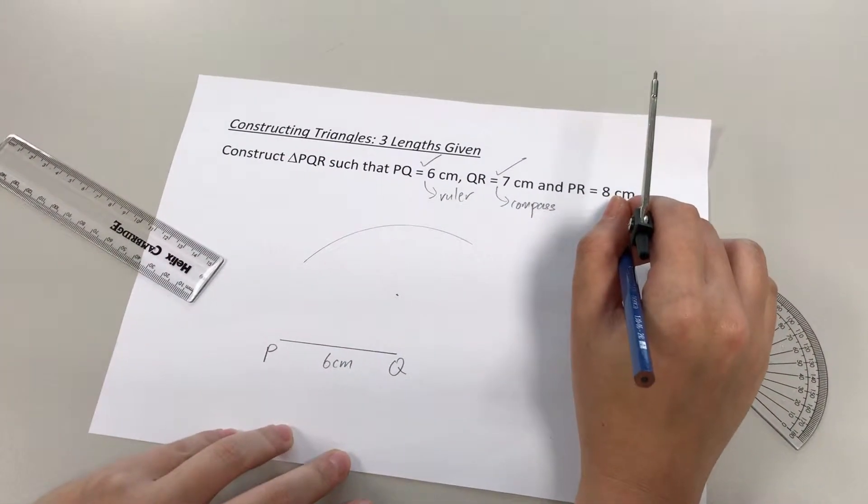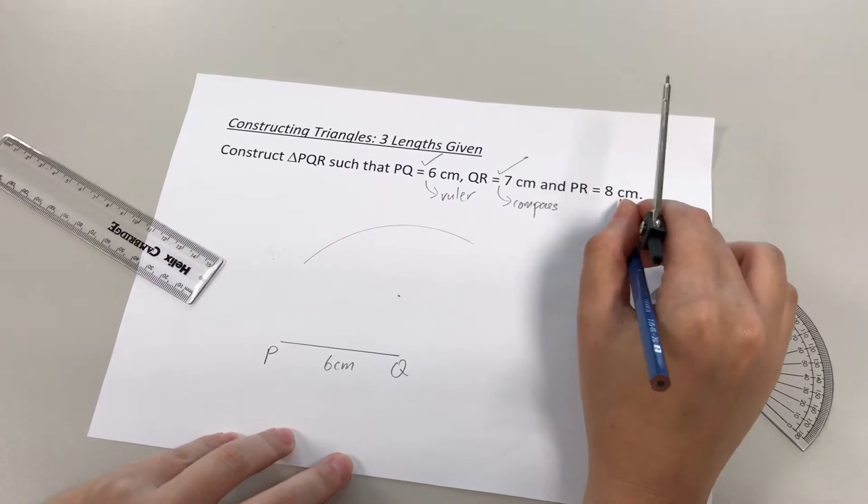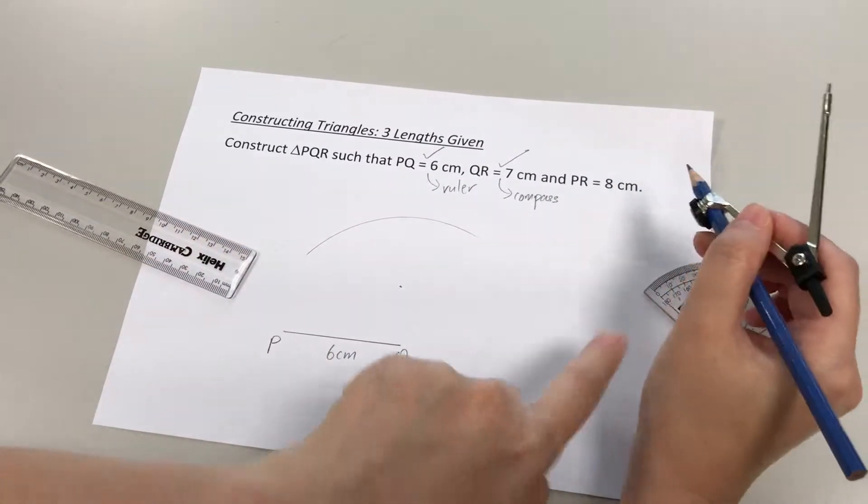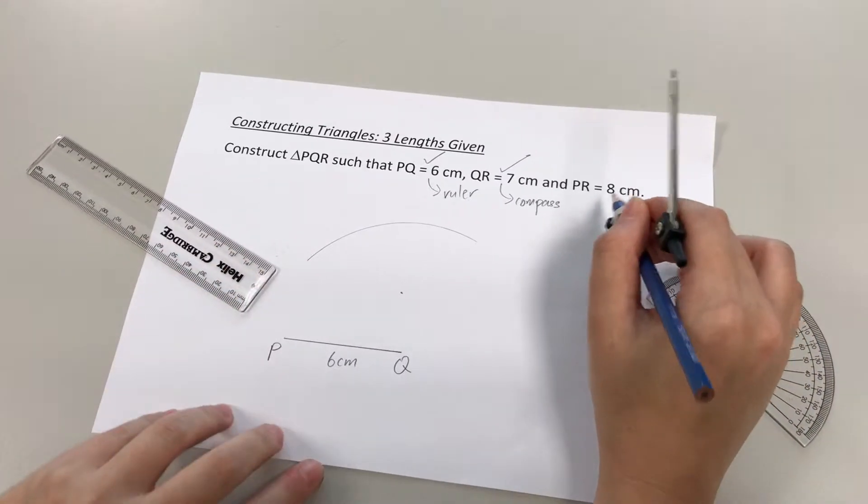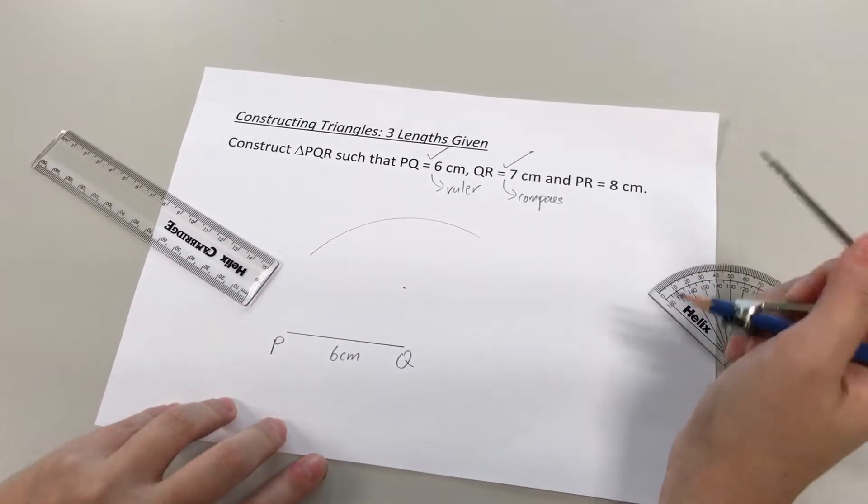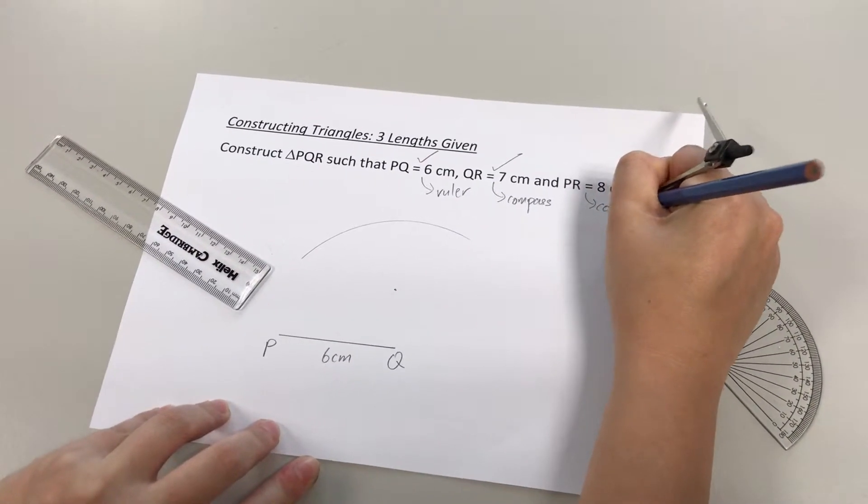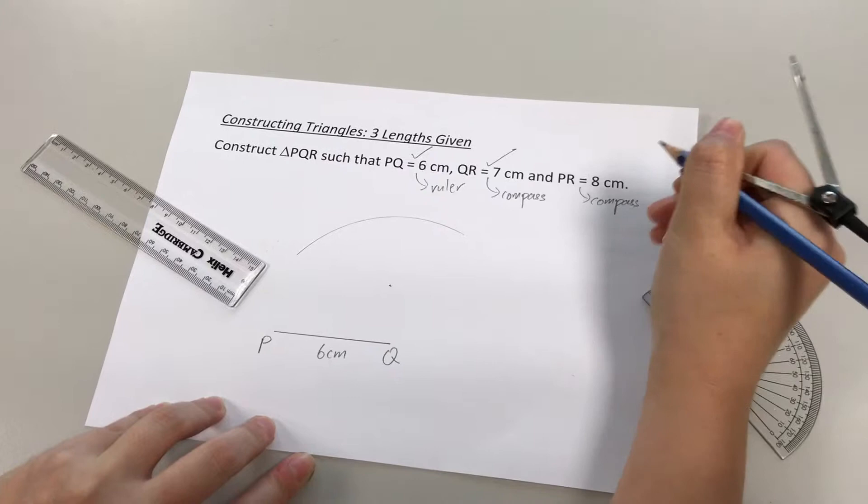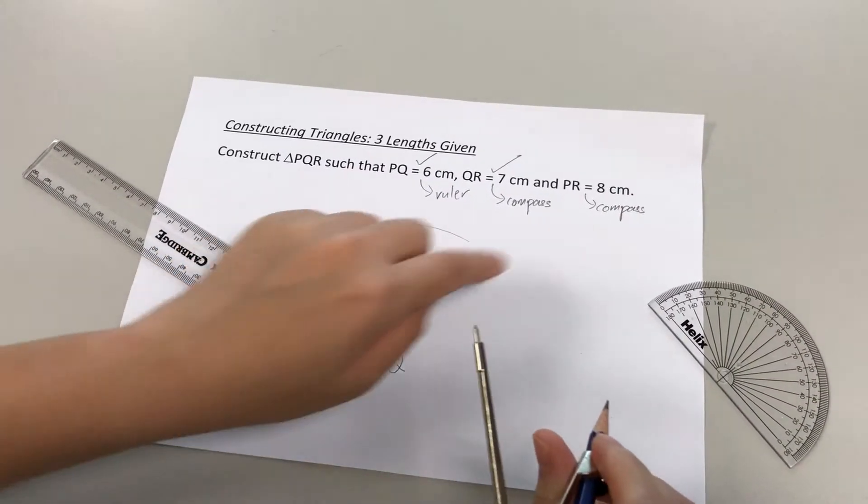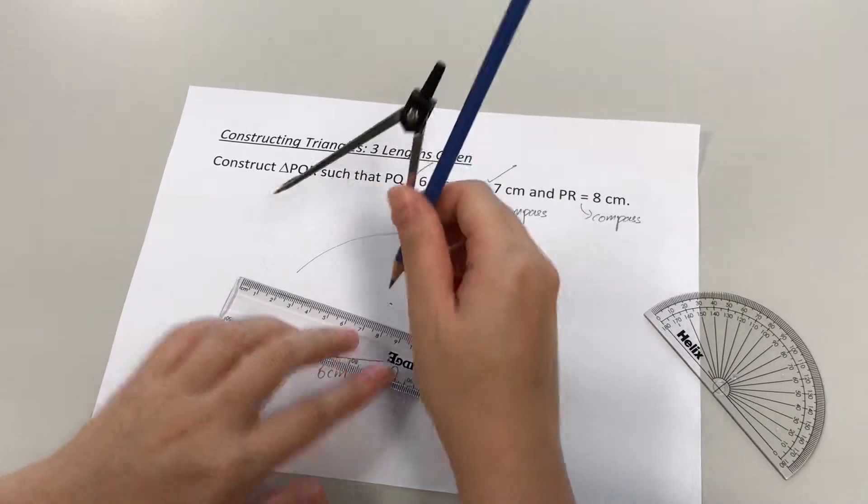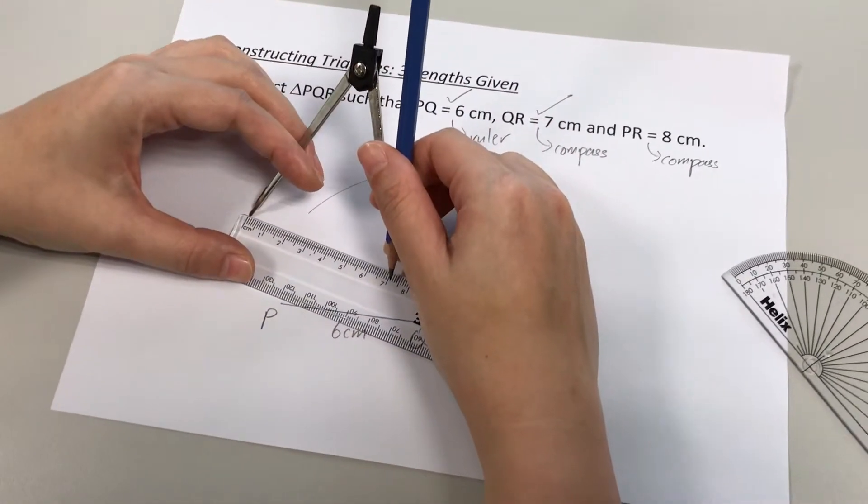Now, we have a third information to draw. PR 8cm. Okay, likewise, you need to be sure which of the equipment we have here are you supposed to use to draw PR 8cm. Okay, so obviously this is a length. So, length has to be drawn using your compass. All right, so it's the same steps as what we did for 7cm, just that now we have to adjust the length to 8cm instead.